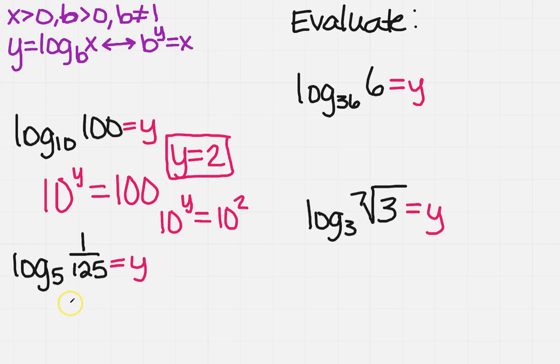Now let's look at the one at the bottom down here. I'm going to take the base, so that would be 5 to the y equals 1 over 125. Well, I know that 1 over 125 is 5 to what power? It's 5 to the third, but if it's 1 over, it's a minus. So on this one, y will equal minus 3.